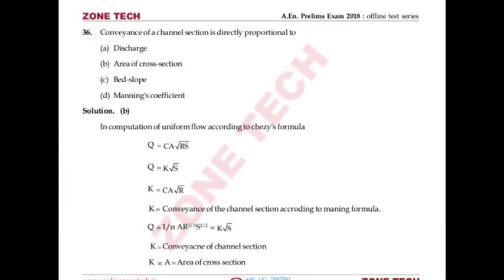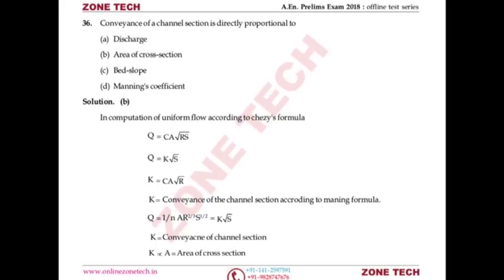Question number 36: Conveyance of a channel section is directly proportional to what? Using Chezy's formula Q = C·A·√(RS), velocity = C·√(RS), so Q = A·C·√(RS). Separating slope term, remaining expression is conveyance. Similarly in Manning's formula Q = (1/n)·A·R^(2/3)·√S — excluding √S gives conveyance. In both cases, conveyance is directly proportional to area of cross-section. Answer is B.